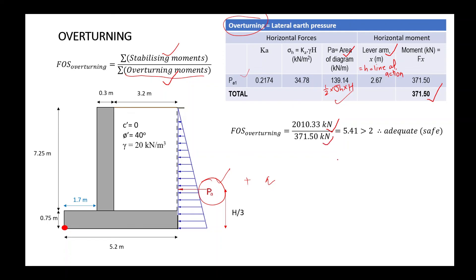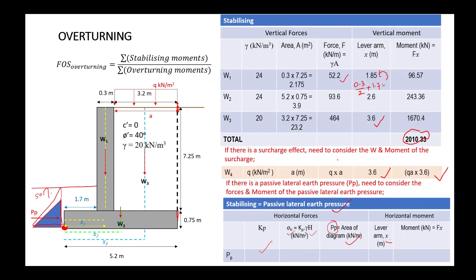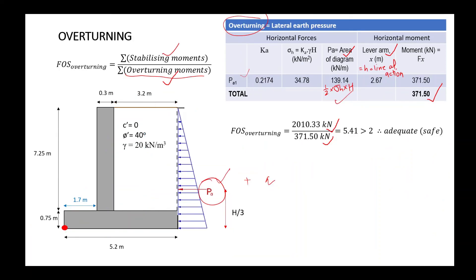Remember: if you have all components, include the surcharge and the passive lateral pressure moment in the stabilizing moment total. For the active lateral pressure side, if you have a surcharge, you must also include the surcharge contribution there. Sum all components accordingly and then calculate the FOS for overturning.